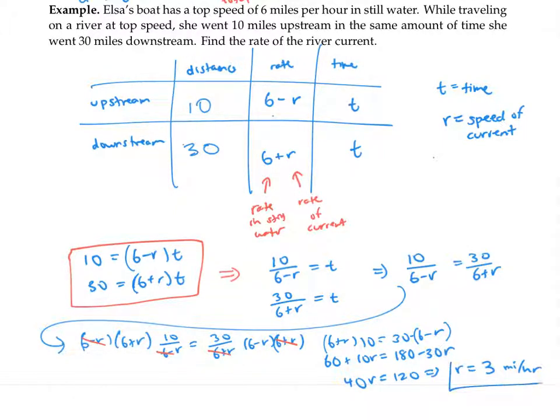This is all that the problem asked for, the speed of the current. If I also wanted to solve for the other unknown time, I could do so by plugging in r into one of my equations and solving for t.